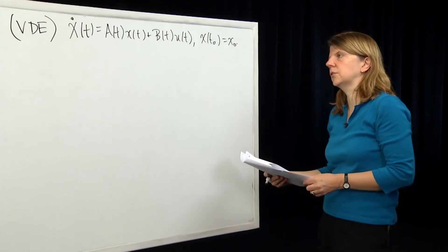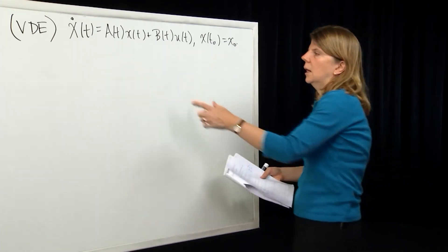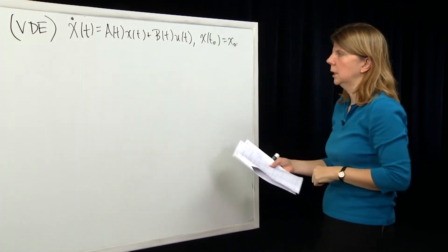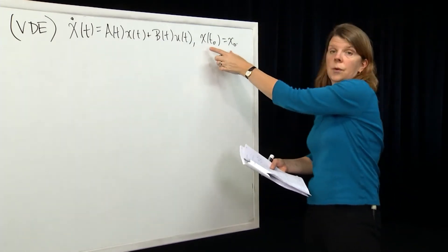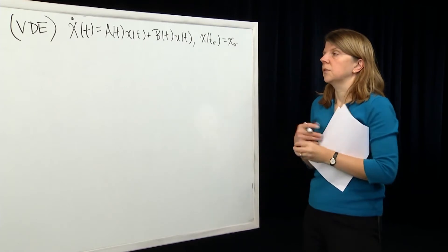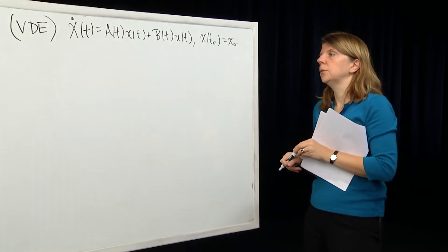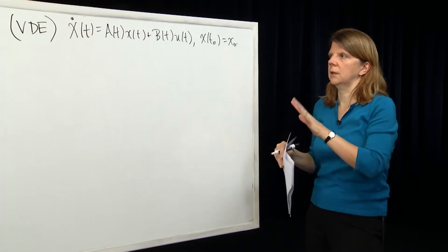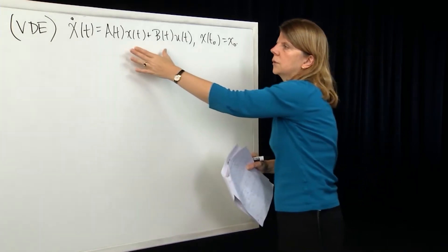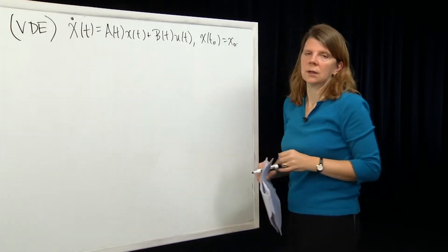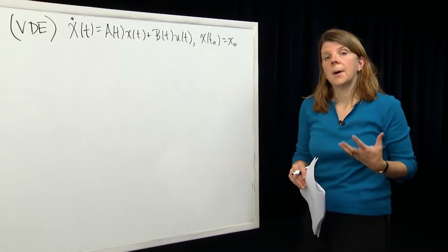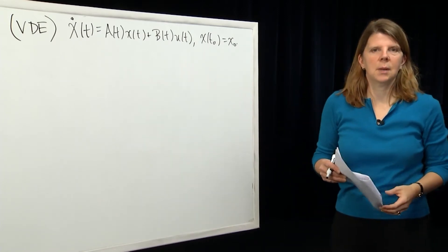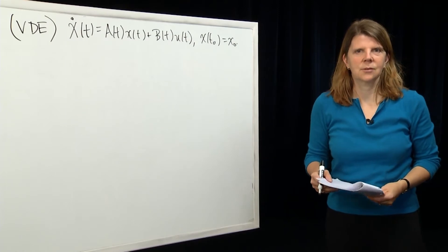We showed that that differential equation is Lipschitz continuous in x, so there exists a unique solution to that differential equation for that initial condition. We're going to construct the solution over the next two modules by defining a solution to a corresponding matrix differential equation.